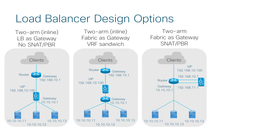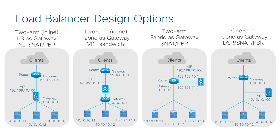The third example is router or switch as the gateway of servers, and the load balancer is not directly in the routing path. Source NAT or PBR is required to make return traffic go through the load balancer. The last example is similar to the third one, but the load balancer is in the same subnet with the servers.